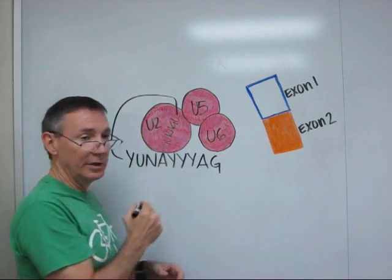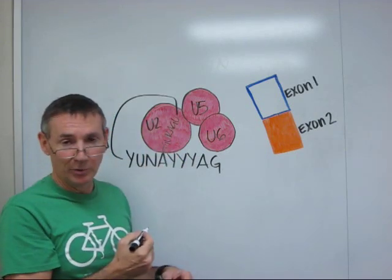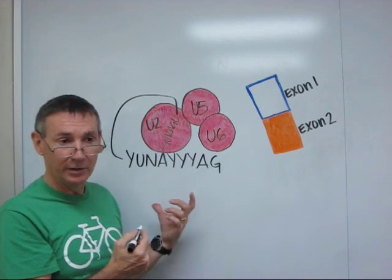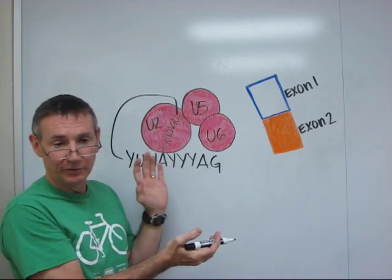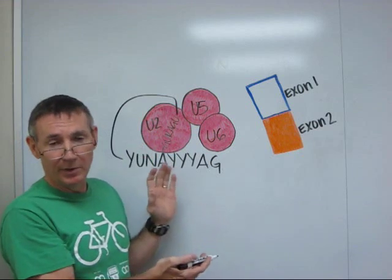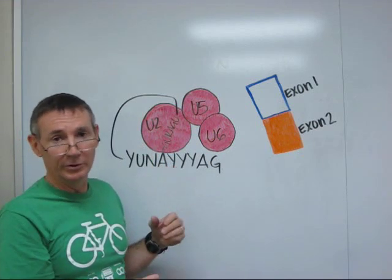The C complex will then cleave the bond, the five prime to two prime bond, at the branch point, giving you an intron that's just a linear piece of RNA, which can be degraded by RNases to loose ribonucleotides. Thank you very much.